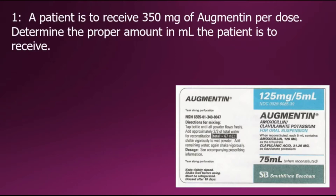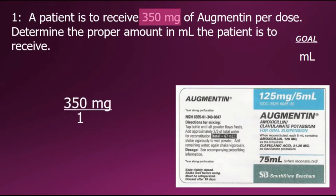In this dosage calculation problem, a patient is to receive 350 milligrams of Augmentin per dose. Determine the proper amount of milliliters the patient is to receive. Our goal will be to have the answer in milliliters. The order is 350 milligrams, and that's what we will start with.